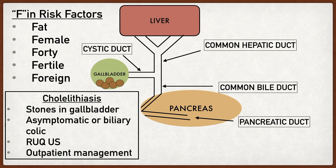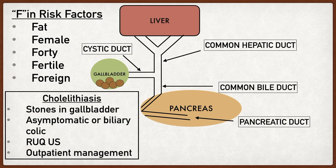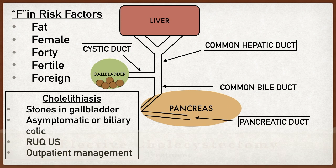Most of these cases can be managed outpatient. Diagnosis is made with a right upper quadrant ultrasound showing gallstones within the gallbladder. If it doesn't cause much problem, you can manage it conservatively. But if it affects someone's ability to live a normal life, you can have discussions about an elective cholecystectomy, which is surgical removal of the gallbladder.